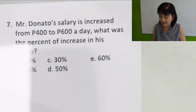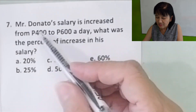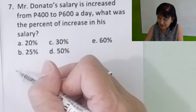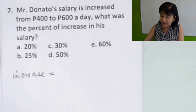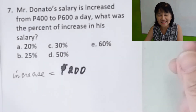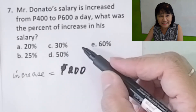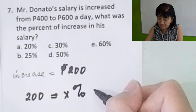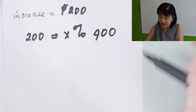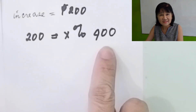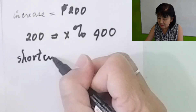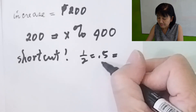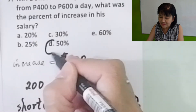Problem number 7: Mr. Donato's salary is increased from 400 pesos to 600 pesos a day. What was the percent of increase in his salary? There was a 200 peso increase. We're asking: 200 is what percent of his original salary of 400? Notice that 200 is just half of 400, so the answer is 0.5 or 50%.